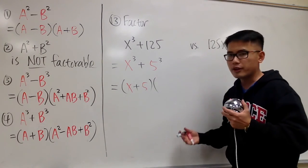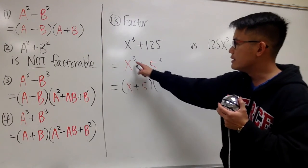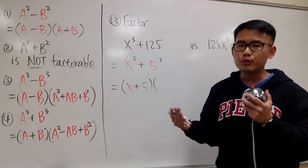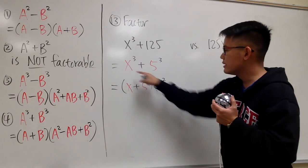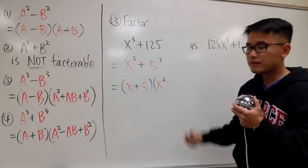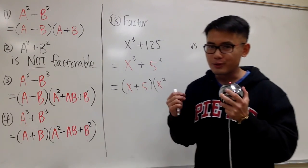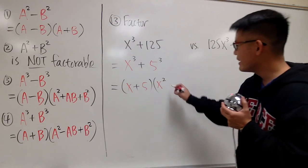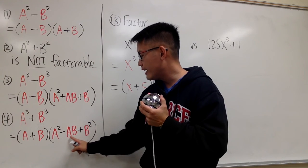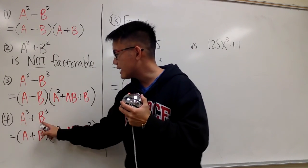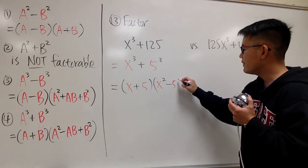For the second parentheses, you are going to have three terms. For the first term, it's a squared — the red thing, which is x — and we raise that to the second power, so we get x squared. Next, this is the tricky part: it's going to be minus. Remember that really well — it's a minus. Minus what? The formula tells us we have to do a times b, namely x times 5, which gives 5x.